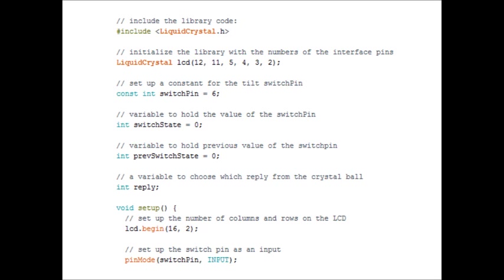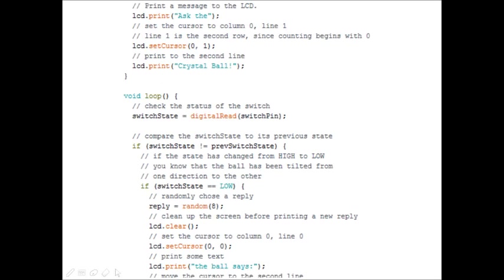Pin mode declares pins as inputs or outputs. Switch pin is 13 so we're declaring pin 13 on your Arduino as an input. Then we are printing the first line on our screen, LCD dot print ask the screen. Then we are setting the cursor to the second line by using lcd dot cursor naught one, and then we are printing crystal ball on the second line. So that's fairly basic. We've just printed ask for crystal ball on the screen, created a load of variables and constants and we have set up the screen.